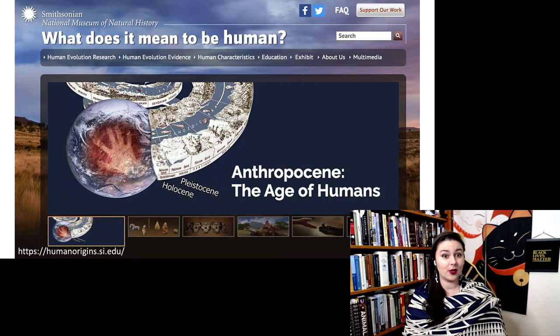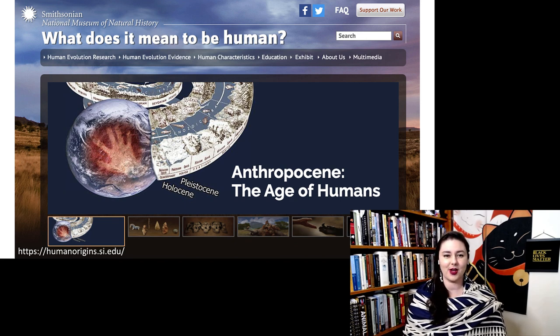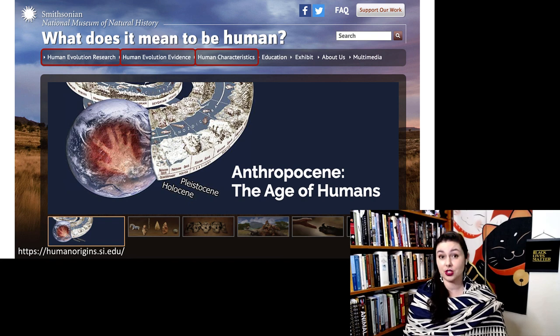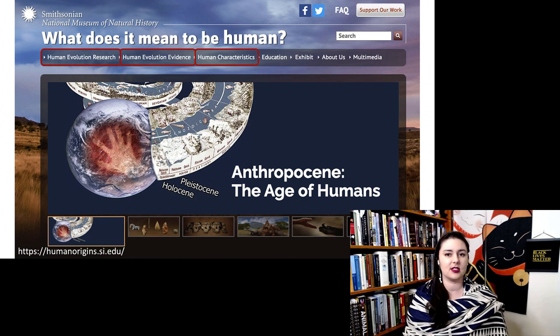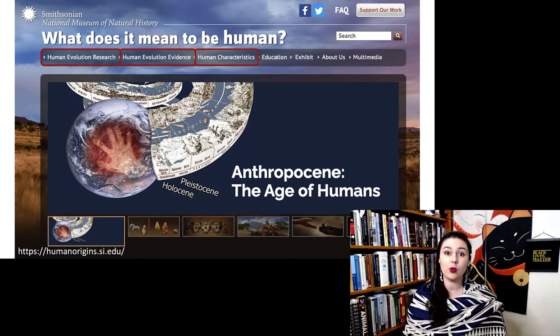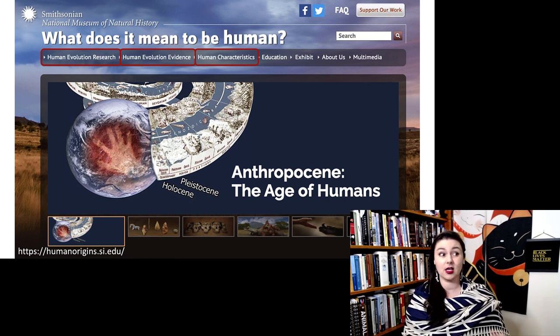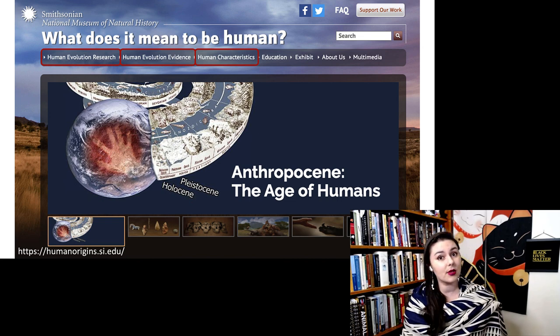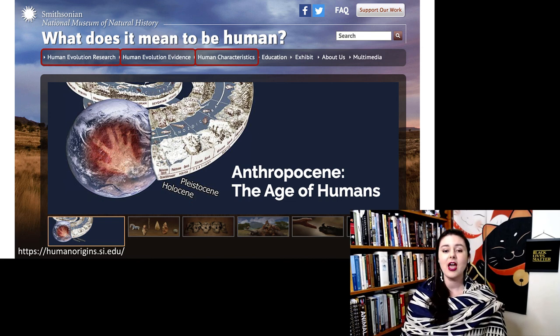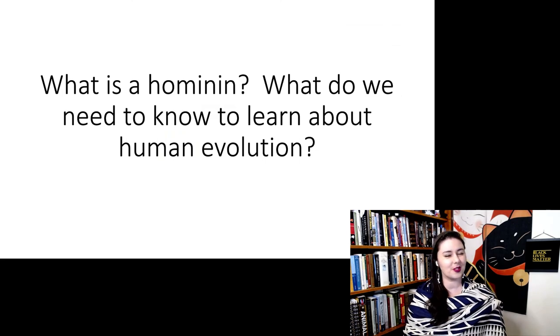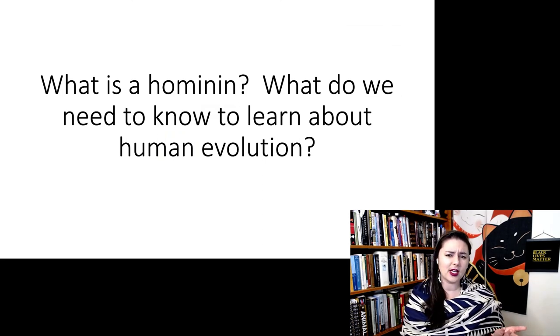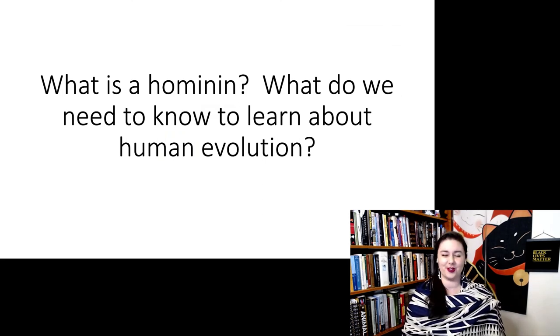The next place you want to go is this amazing website put together by the Smithsonian Museum of Natural History. So there are these three tabs, which are the primary ones you're going to want to look at: the different research, the evidence, and the human characteristics. This will be a great way to look at what are the different species, what are their characteristics, where do we find them in the world, what time period did they live, what were their features, and also how they're all related. So can you explain what is a hominin and what do we need to know to learn about human evolution?